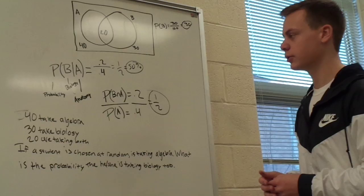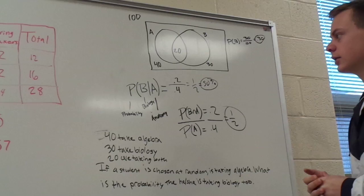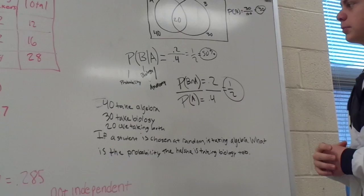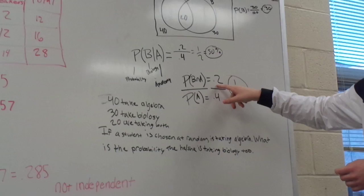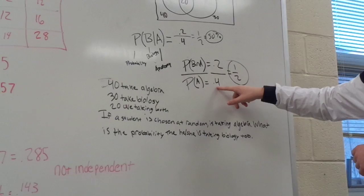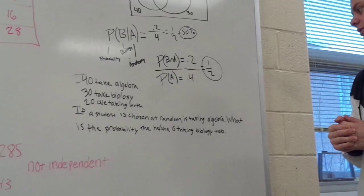So we should set up the probability of B and A over probability of A for this one. So P equals probability, and B is biology, and A is algebra. So it would be the probability of both, which is 0.2, and probability of A, which is 0.4, so then we'd get half. So half of the students that take algebra would be taking biology as well.